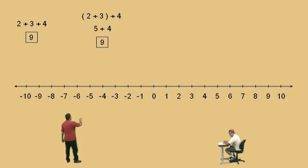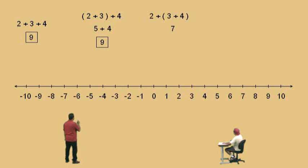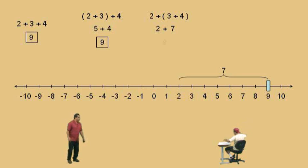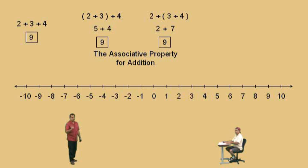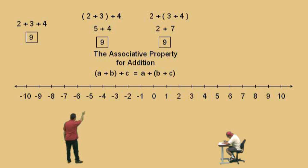Now watch this, Charlie. Here's a sum: it's two plus the quantity three plus four. The parentheses is telling you to add three and four first. What's three plus four? Seven. Very nice. And to the seven we add the two, so we have two plus seven. What do we get? Nine. Notice those two sums with the parentheses give the same result. That is called the associative property for addition. The associative property of addition states that the quantity A plus B, plus C gives the same result as A plus the quantity B plus C.